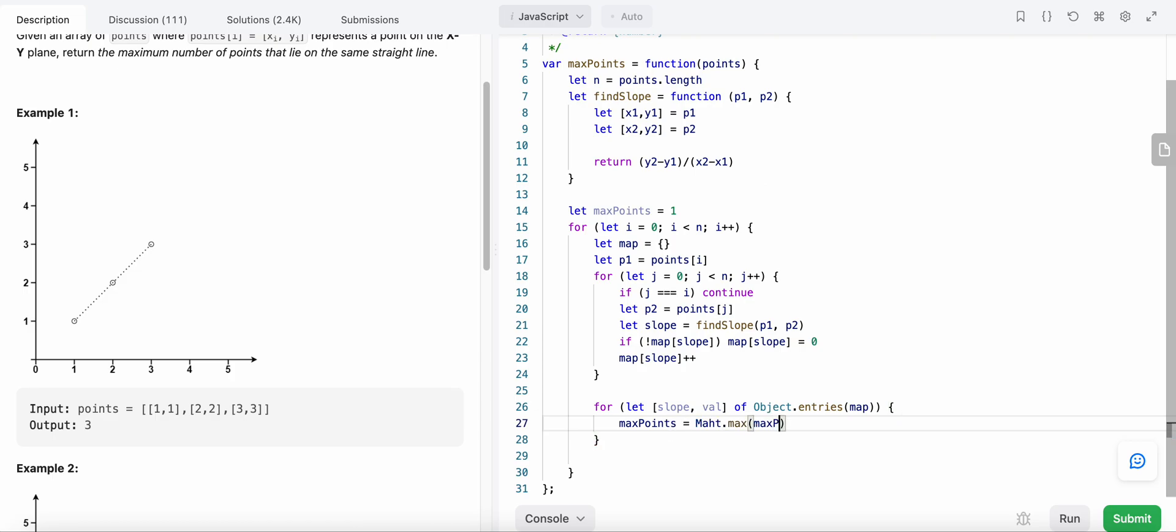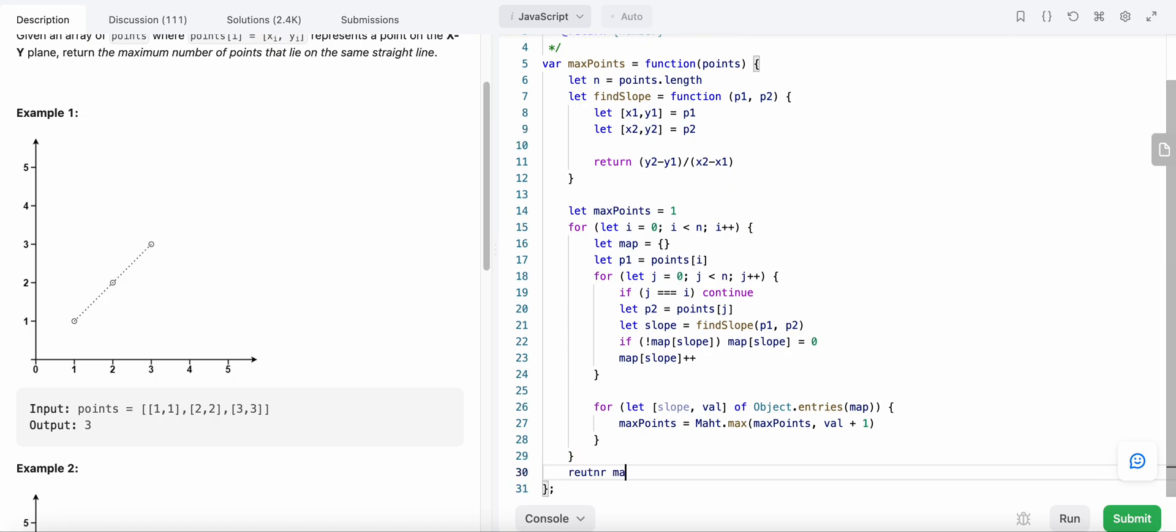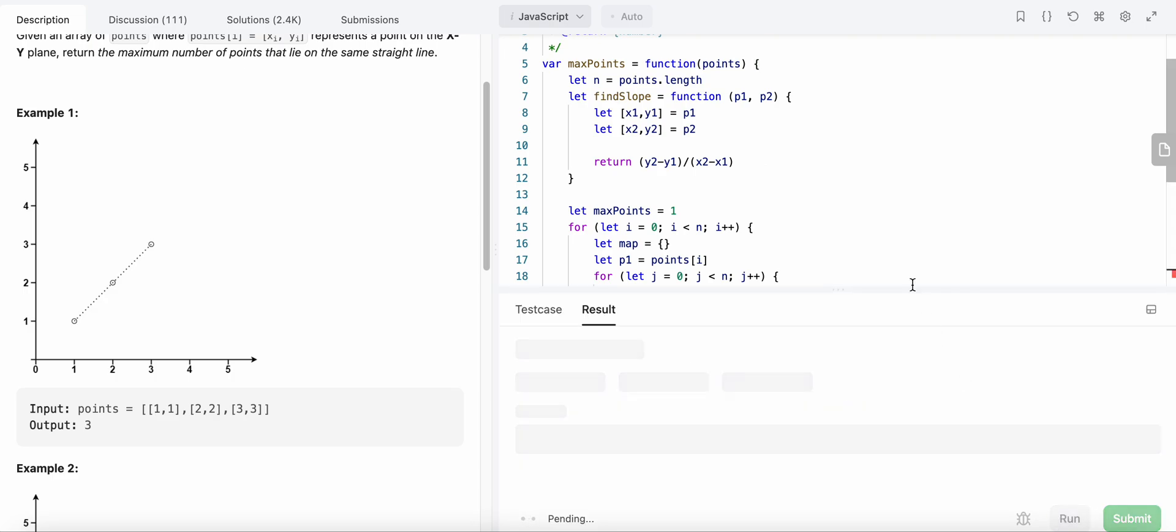max_points equals the value plus one, and we could finally return our max_points. Let's try to run our code.